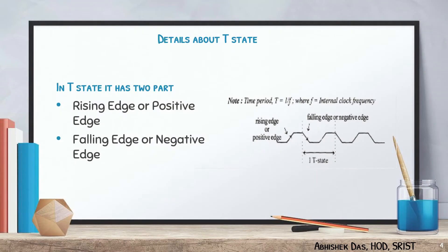Now we are going to discuss about T-state. The T-state is one clock period. There are two parts in a T-state: one is the rising edge or positive edge, and one is the falling edge or negative edge.